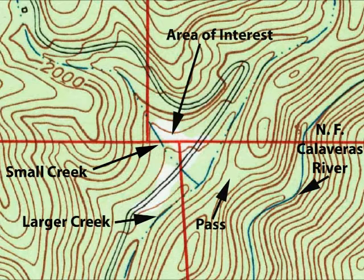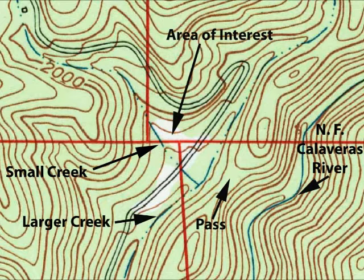In this topo image, you can very clearly see where the streams are. There's a small creek that goes through the meadow, there's a larger creek, and the Calaveras River is clearly marked here. If you remember from the Google Earth image, the Calaveras River was very difficult to see — it was only suggested by a squiggly line through the greenery, and you couldn't even see the other creeks very clearly.